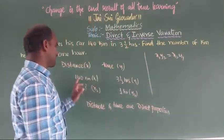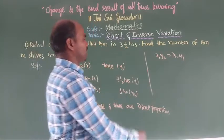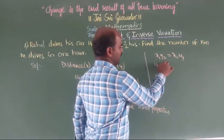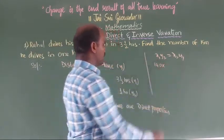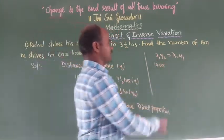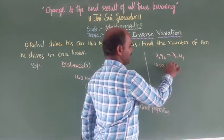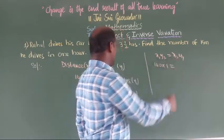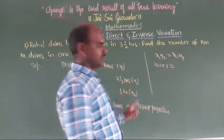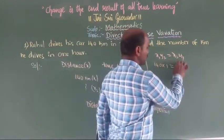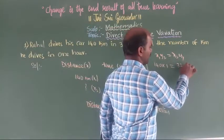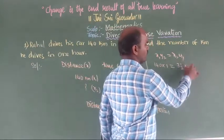Substituting the values: x1 is 140, y2 is 1. So 140 × 1 = x2 × y1. Y1 is 3.5 hours, which is 3 and a half, so that is 7 by 2 into x2.